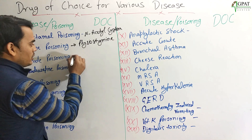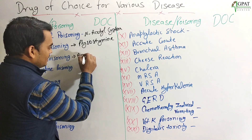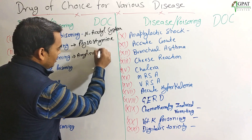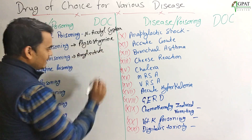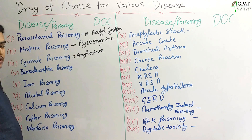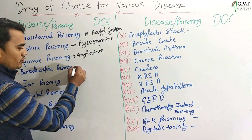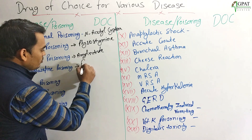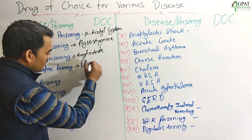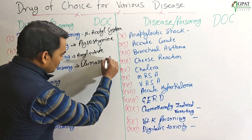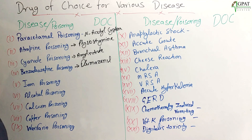Next: Cyanide poisoning. For cyanide poisoning, Amyl Nitrite is the drug of choice. Next: Benzodiazepine poisoning. For benzodiazepine poisoning, Flumazenil is the drug of choice.